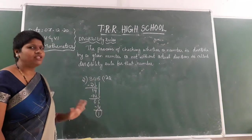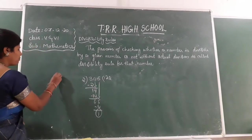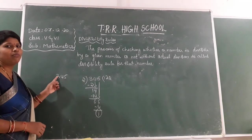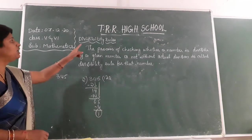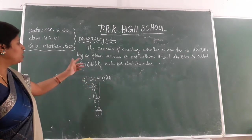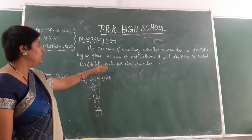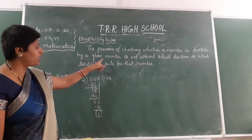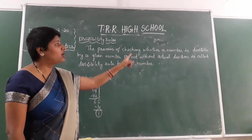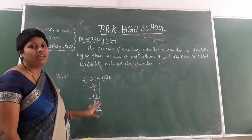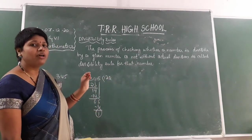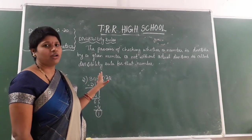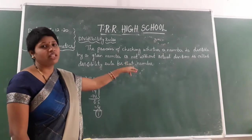So, without going through the division process, just by looking at 345, I can say that this number is not divisible by 2. How? By using divisibility rules. Here is the definition: the process of checking whether a number is divisible by a given number or not, without performing actual division — by applying the divisibility rule, we can say whether a number is divisible or not.